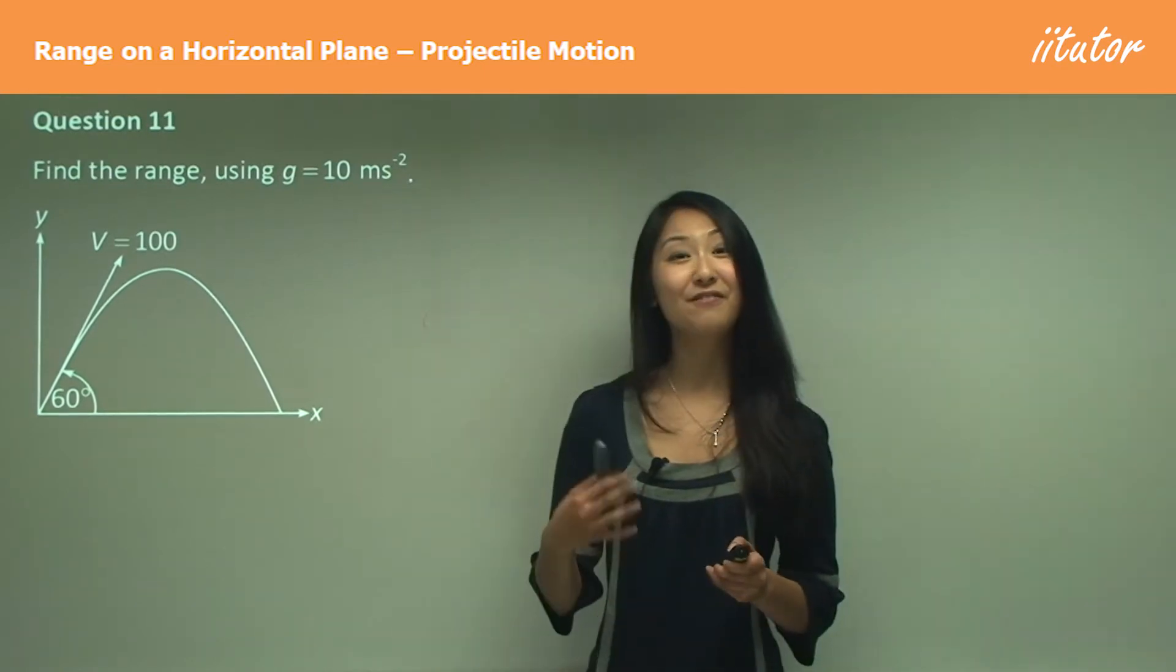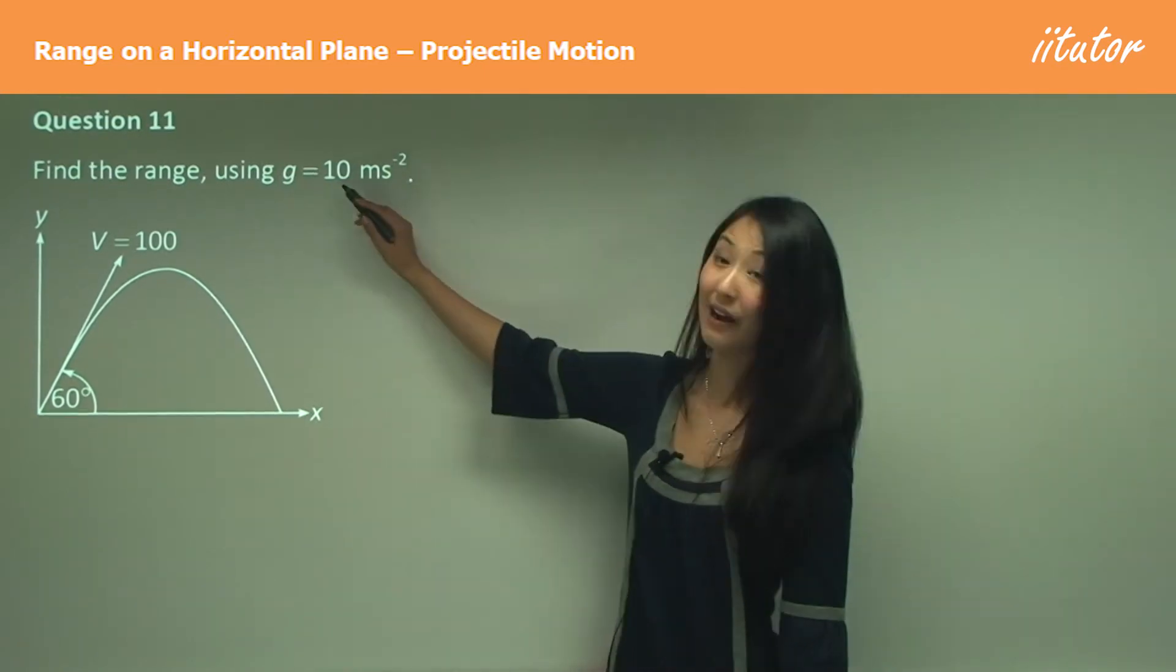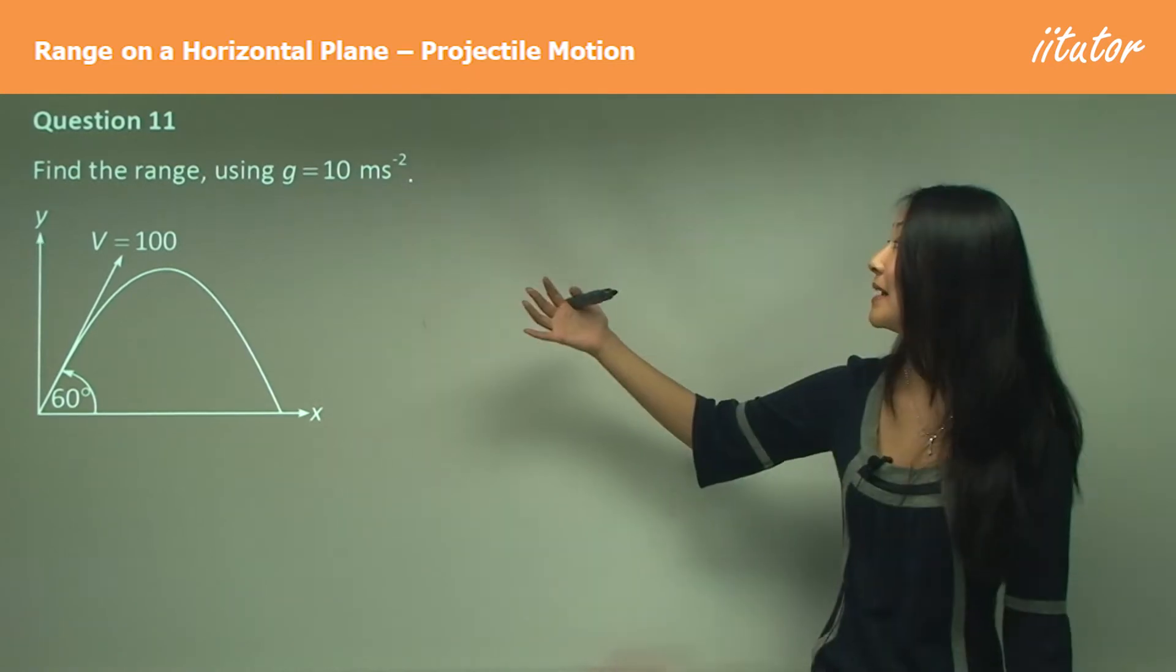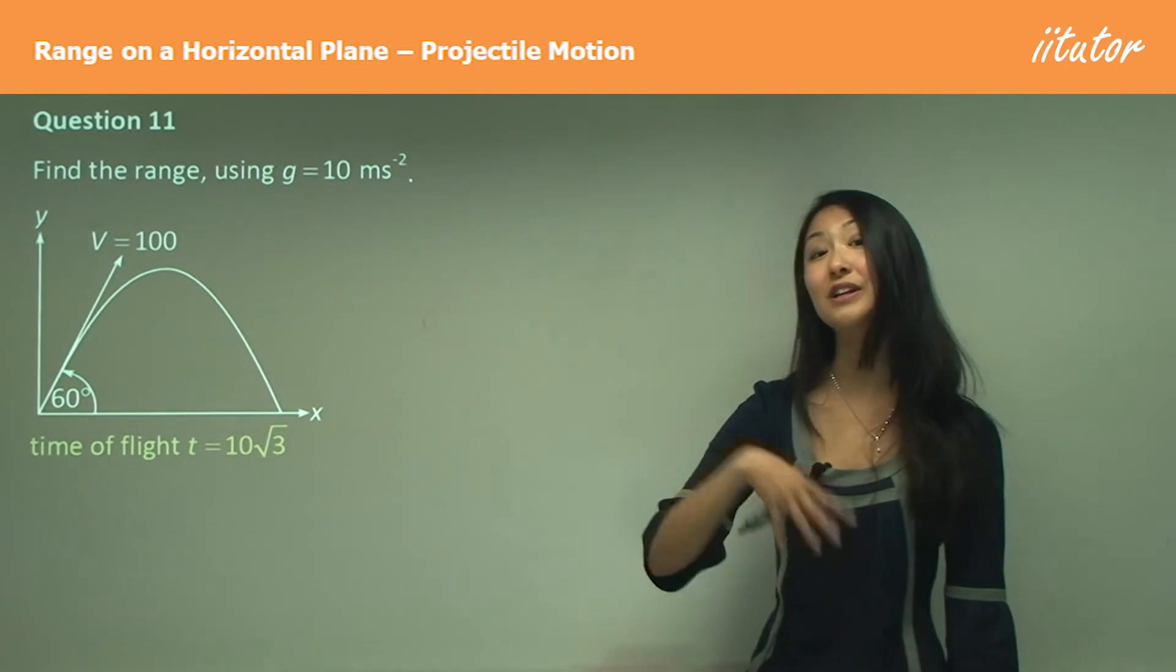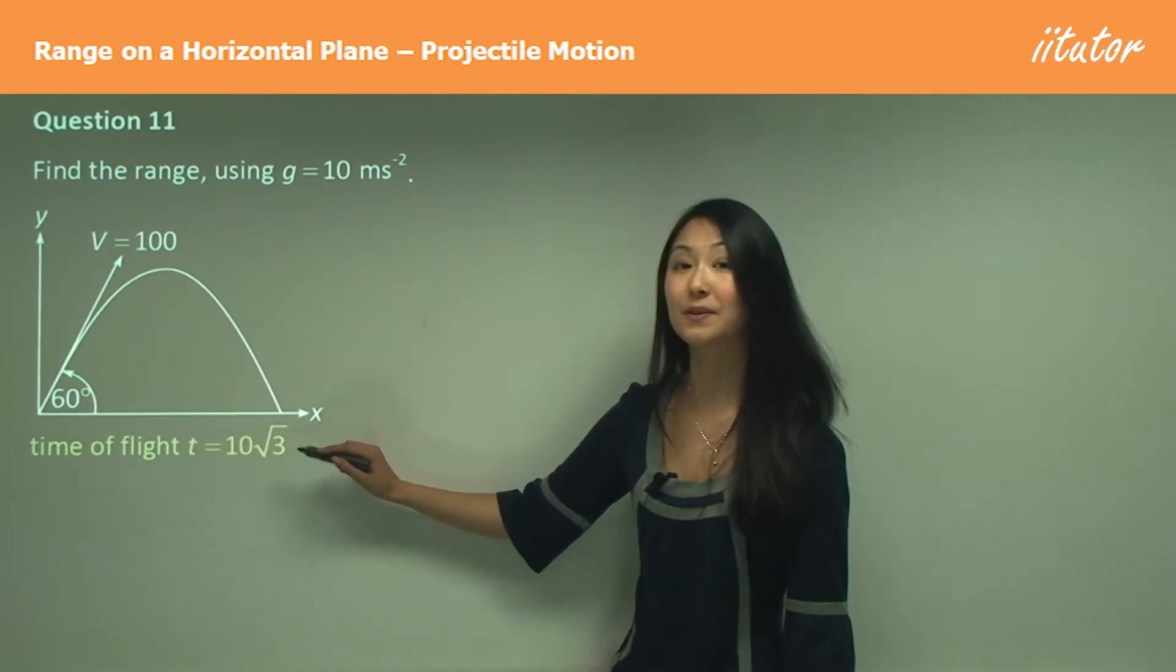So here we want to find the range using gravity equals to 10 meters per second squared. Time of flight from question 10, we'll continue from that, was 10 square root 3.